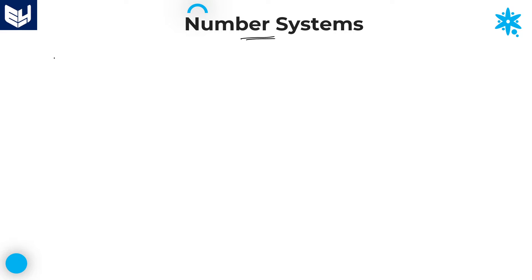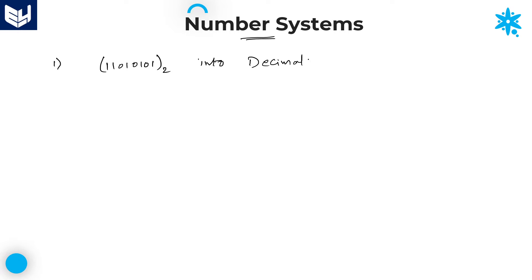I will explain a few problems related to those conversions. First one is binary to octal — actually, binary to decimal. Let us take a binary number: 1101 0101. I just want to convert this binary number into decimal number.